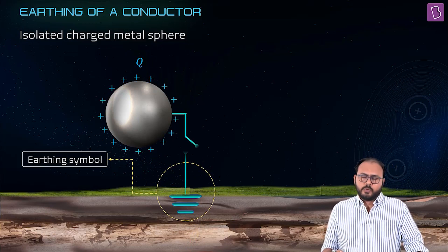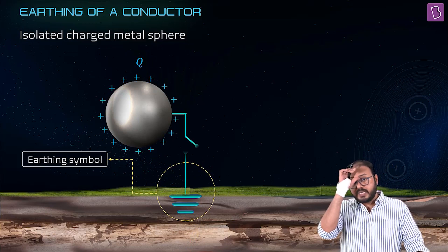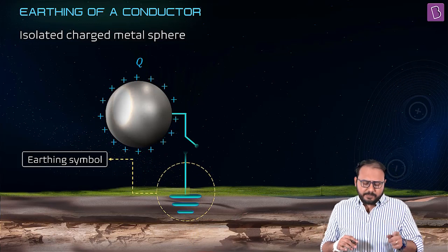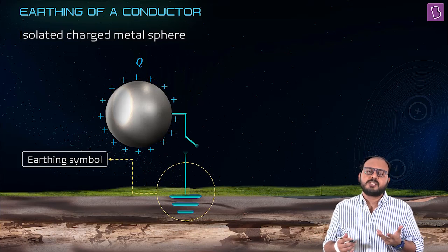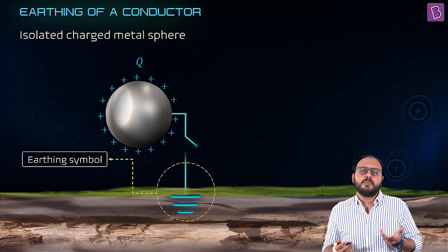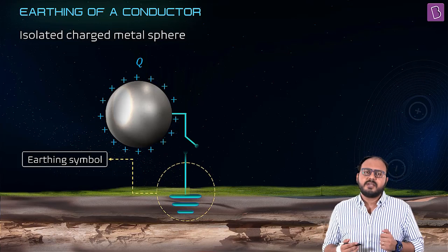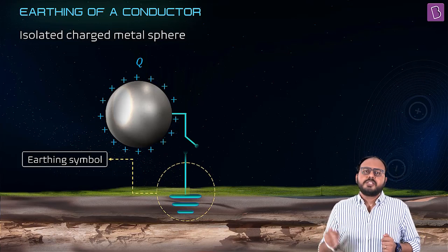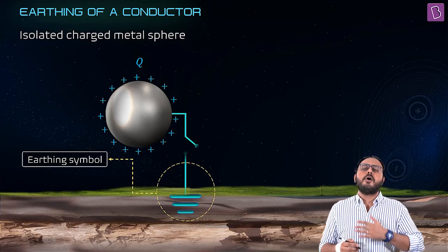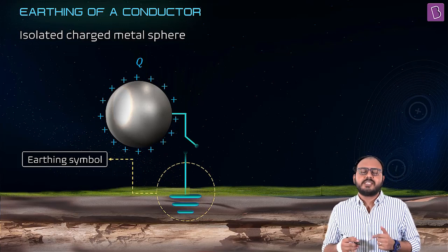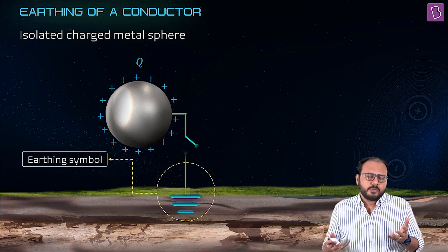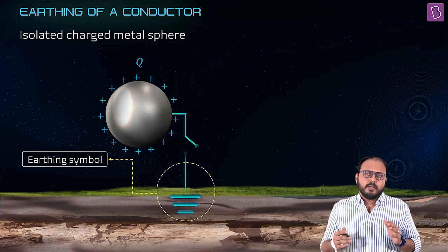Capital Q. In order for this isolated metallic sphere to become zero potential, what is the only possibility? The entire charge should become zero. Otherwise the potential will be kQ by r, right? So how can I make the potential zero when there's still a charge? The earth comes to rescue. It says, 'Your potential needs to be zero, let me help you out.'